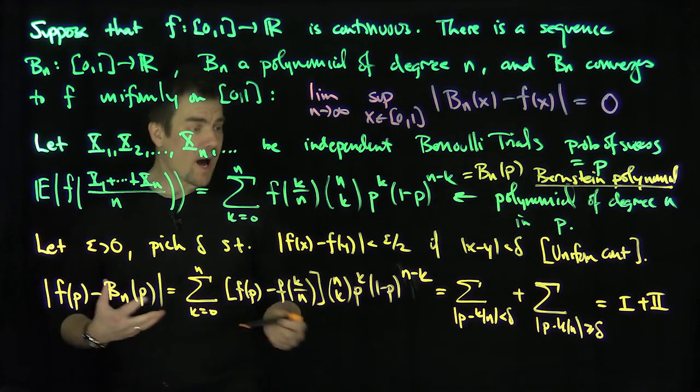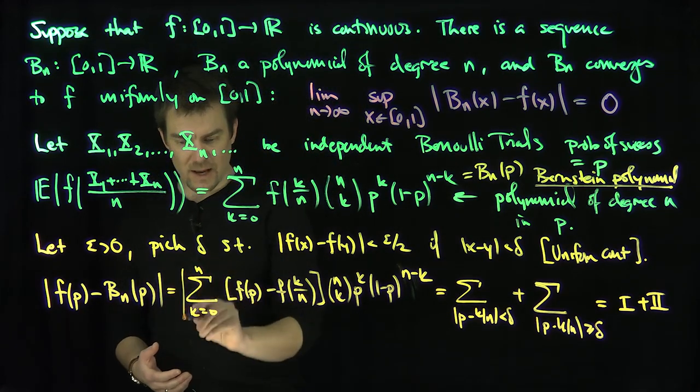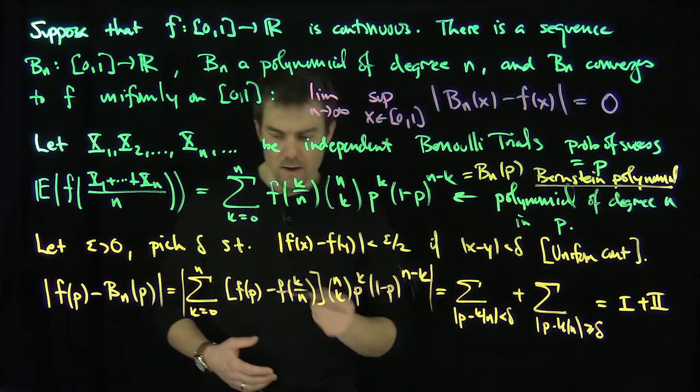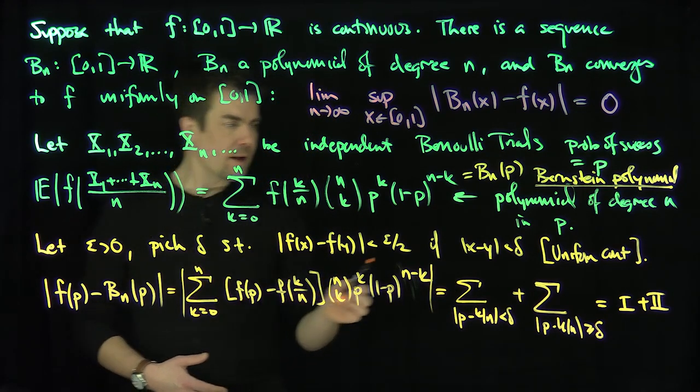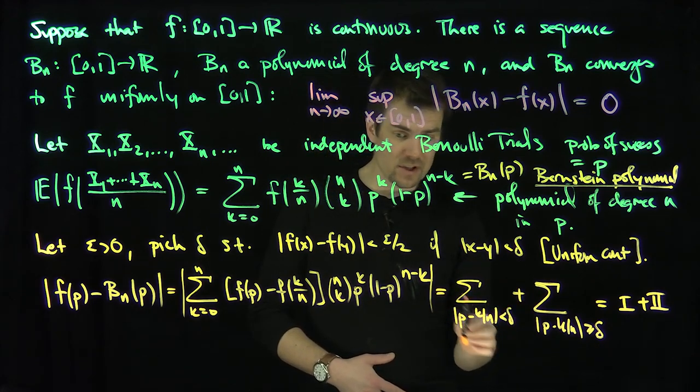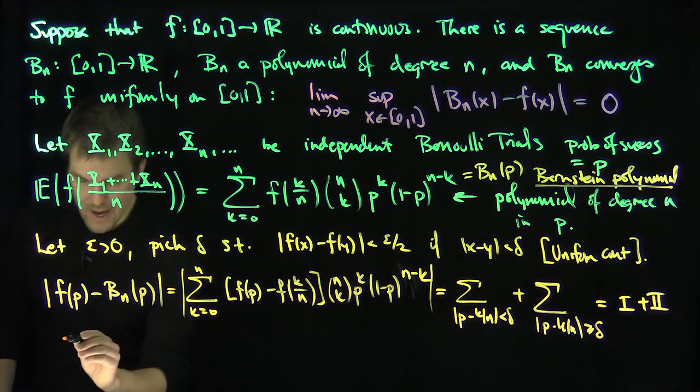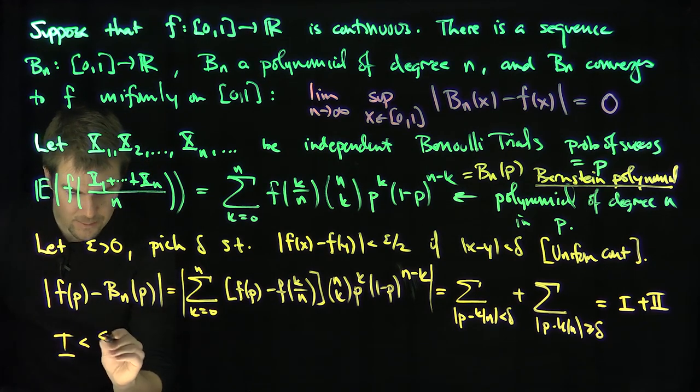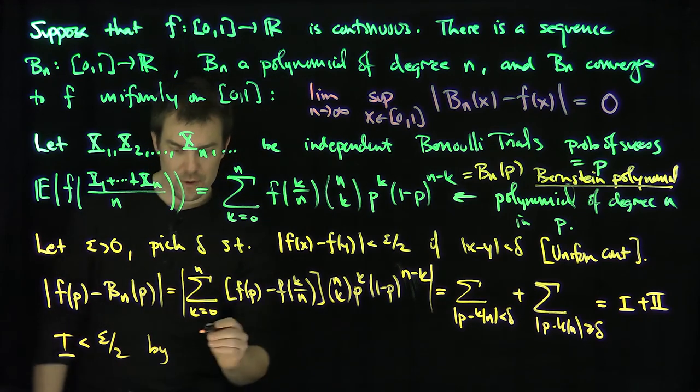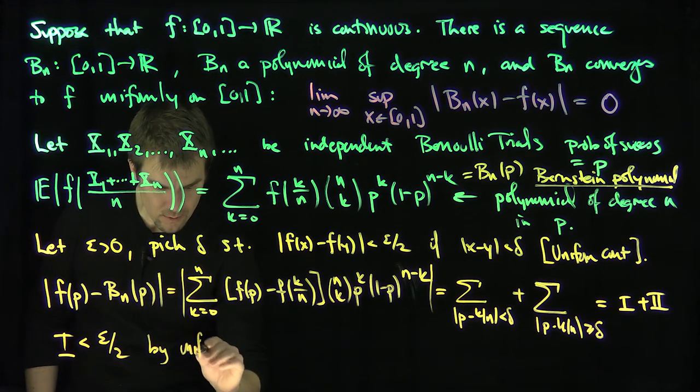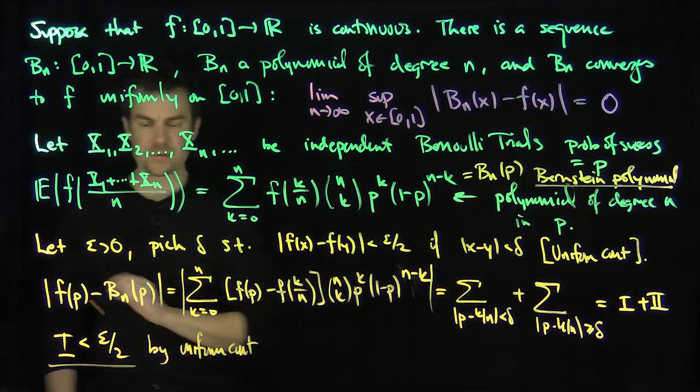On I, I can control everything. The difference between f(p) and f(k/n) is less than delta on this first sum, so that's less than epsilon/2 times the probability distribution. So I is less than epsilon/2 by the uniform continuity.